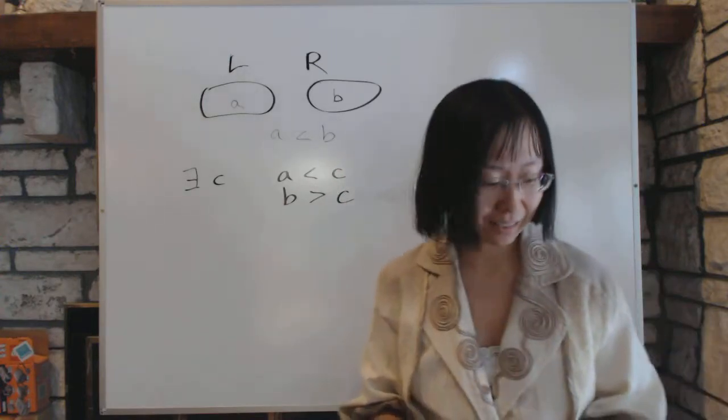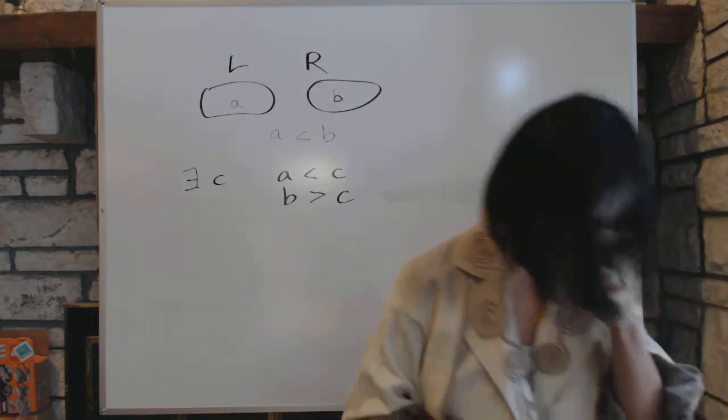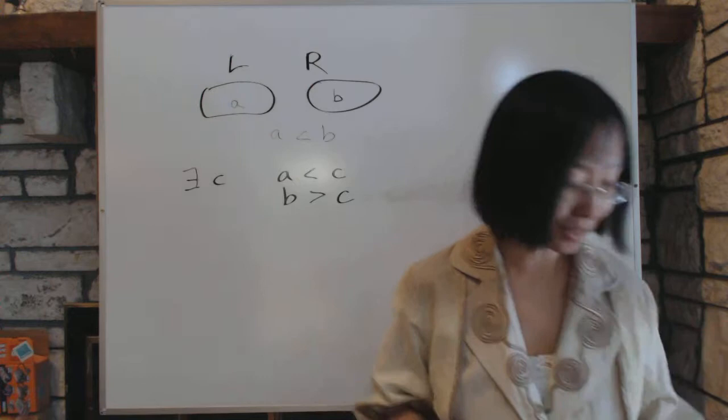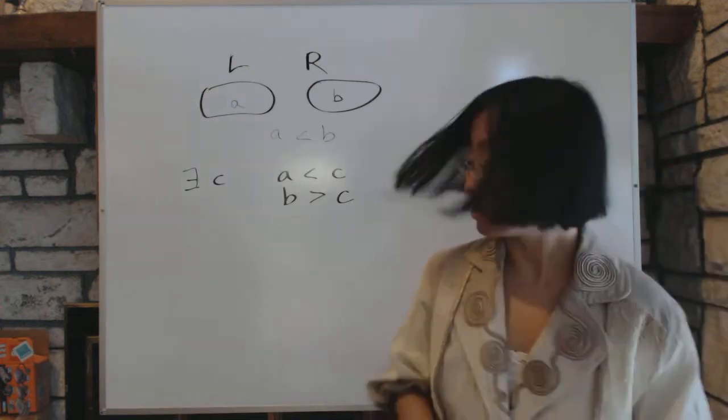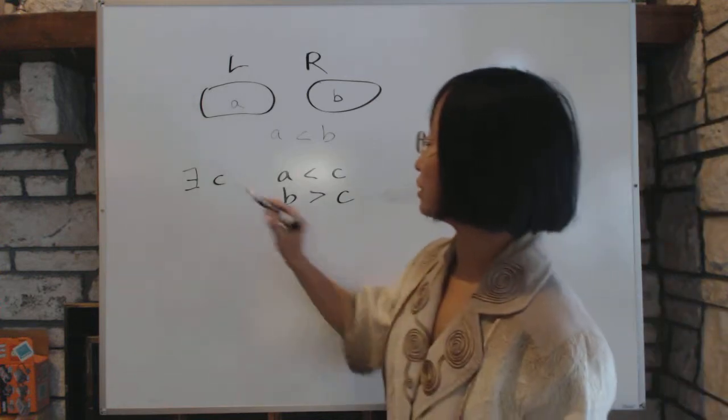Now, C is called the cut, which is fairly intuitive. C itself might belong to L and R, we're not really interested. Now, first we have to prove that C is unique.